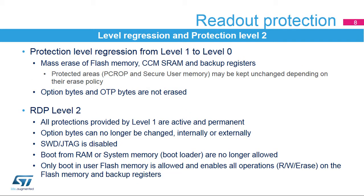It is possible to modify option bytes in level 1, and thus possible to remove the protection by changing the protection level to level 0. This protection level regression will cause the flash memory, the CCM SRAM, and the backup registers to be mass erased. Flash areas protected by PCROP or configured as secure user memory can be erased or left unchanged, depending on their erase policy configuration.